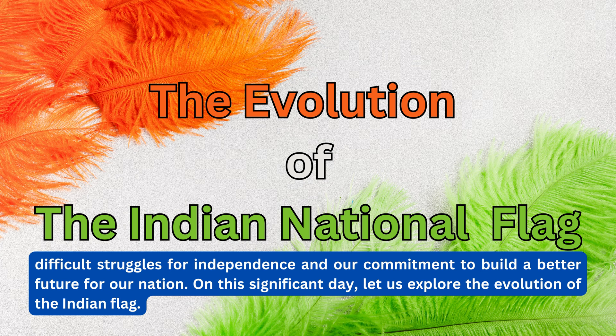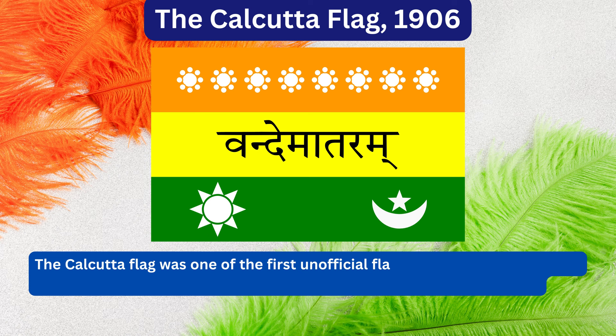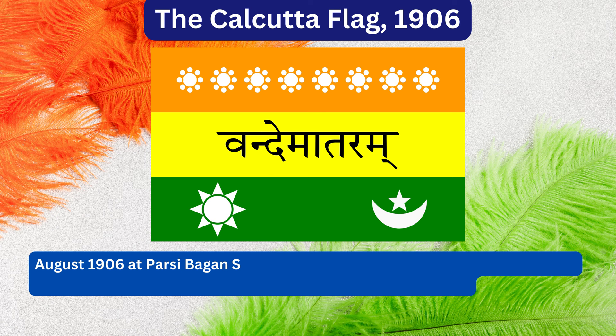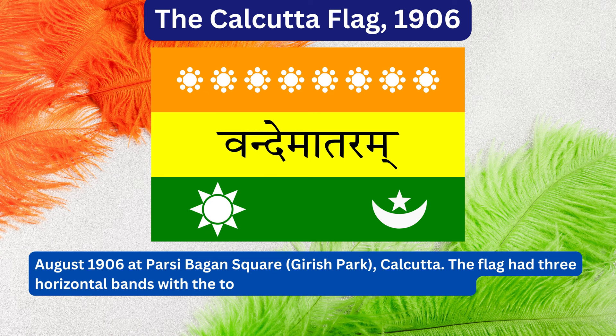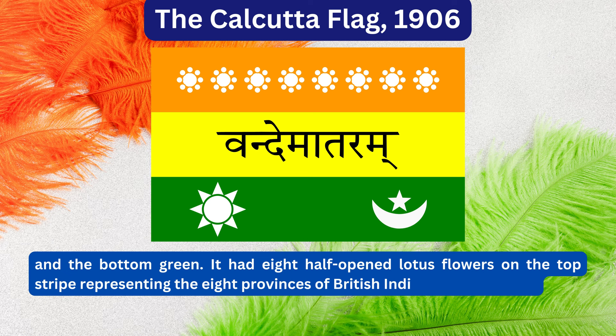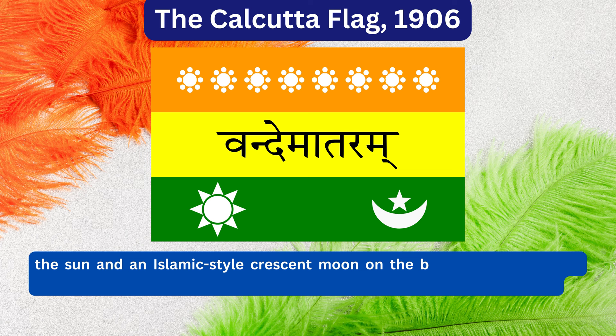The Calcutta flag was one of the first unofficial flags of India. It was designed by Sachindra Prasad Bose and Hemchandra Kanungo and unfurled on 7 August 1906 at Parsi Bagan Square, Calcutta. The flag had three horizontal bands with the top being orange, the centre yellow and the bottom green. It had eight half-open lotus flowers on the top stripe, representing the eight provinces of British India, and a picture of the sun and an Islamic-style crescent moon on the bottom stripe.